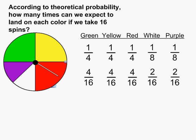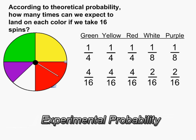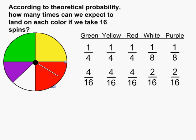Now that's only what we expect. If we actually spin the spinner 16 times, more than likely we will not land on green, yellow, and red exactly four times, and white and purple exactly two times. That's why we have something called experimental probability. Experimental probability is determined by actually carrying out the action. So let's spin the spinner 16 times to determine what the experimental probability is and then compare it to what we expected.